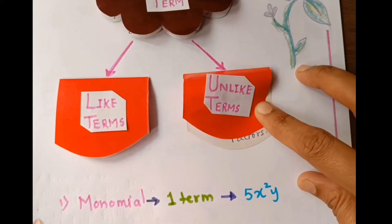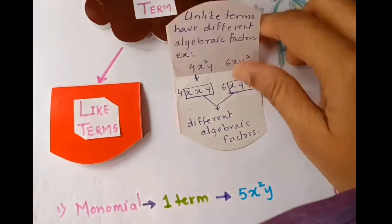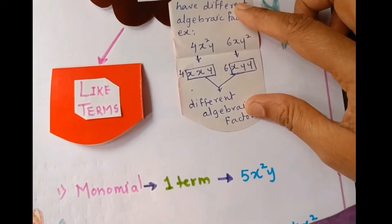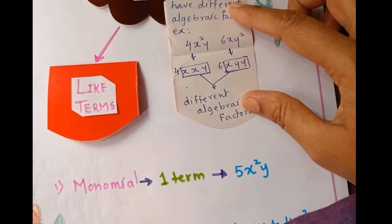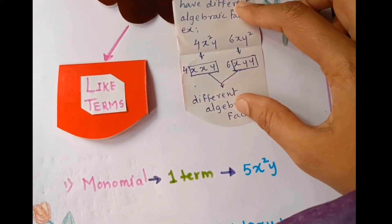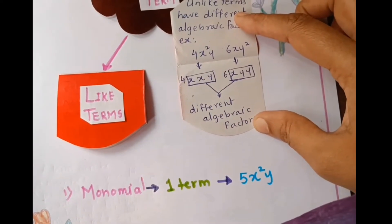Unlike terms. Here is the meaning and example. Unlike terms are which have different algebraic factors or terms.